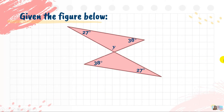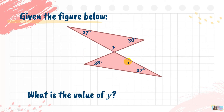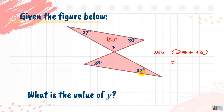Number 2 on the Average Round: we have two congruent triangles with angles 27 degrees and 38 degrees. What will be the value of Y? The internal angles of a triangle sum to 180 degrees. So: 27 plus 38 equals 65; then 180 minus 65 equals 115. Therefore, Y equals 115.